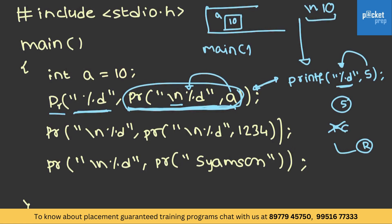Printf actually returns the length of the output word. Here the output word has three characters: first is a newline character, second character, third character. This is actually replaced with 3. As we have seen, the function call is replaced with the return value. This expects an integer and the integer turns out to be 3, so the output of this will be 3.